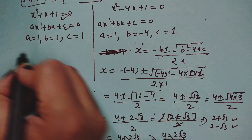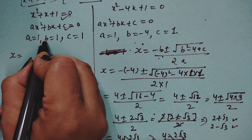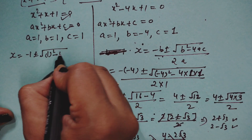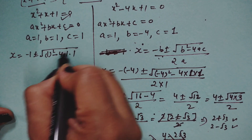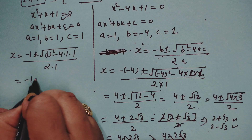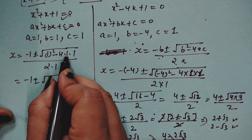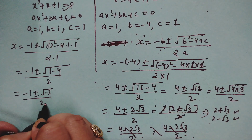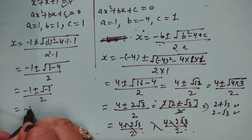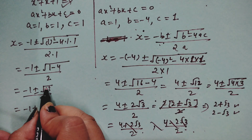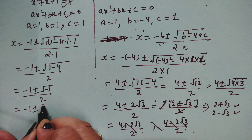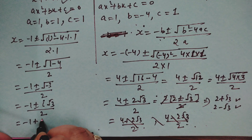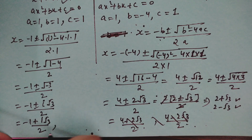For x² + x + 1 = 0: a = 1, b = 1, c = 1. Applying the formula: x = (−1 ± √(1 − 4)) / 2 = (−1 ± √(−3)) / 2 = (−1 ± i√3) / 2. This gives two complex values.